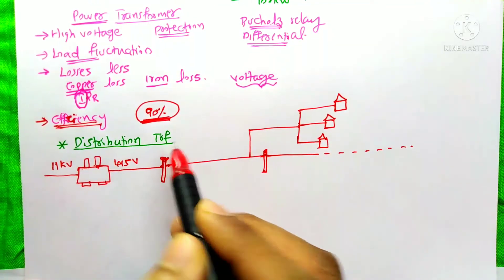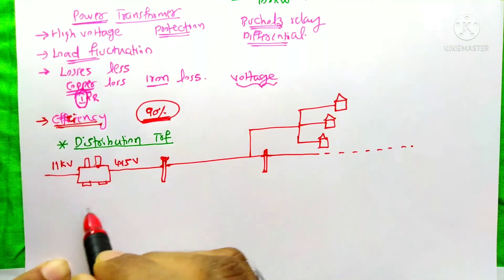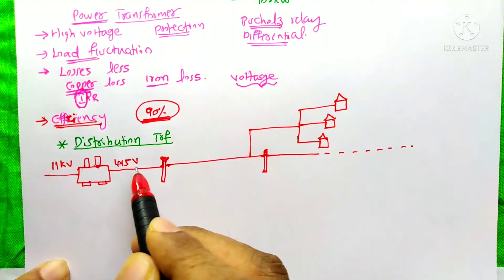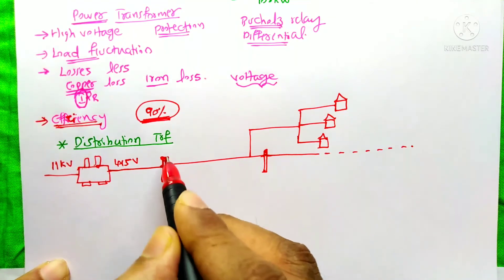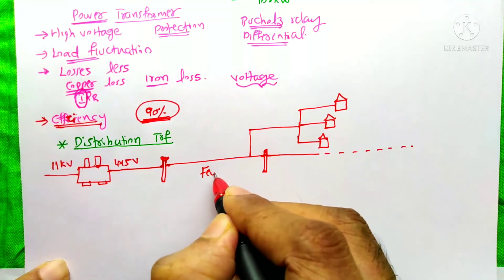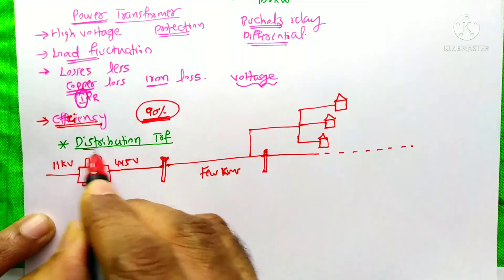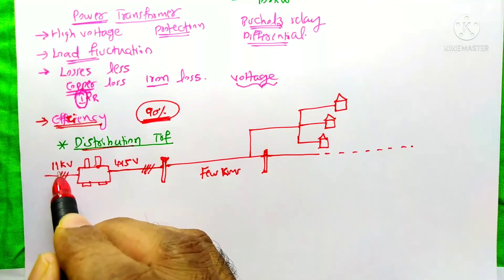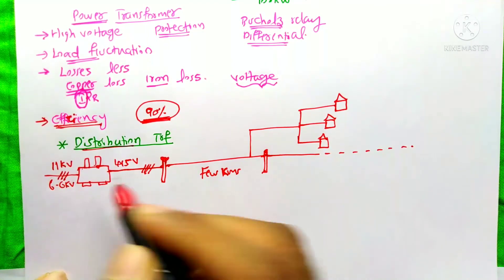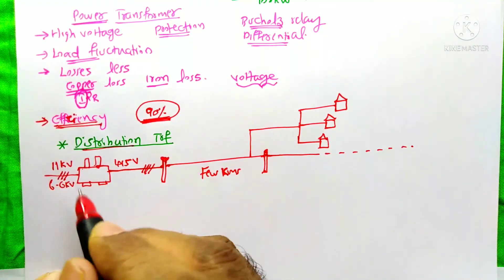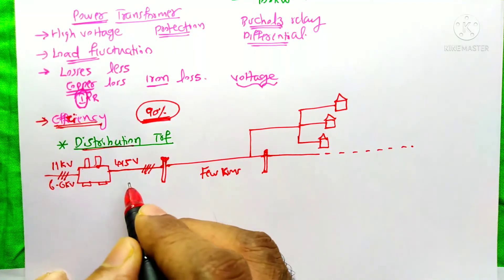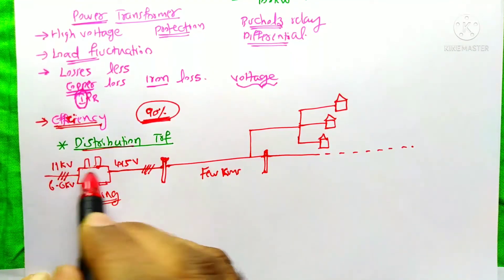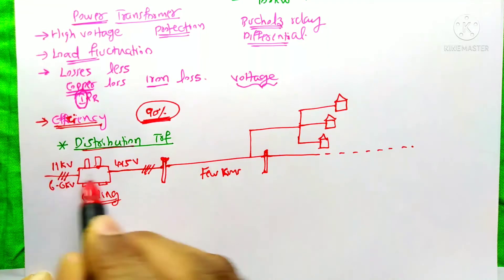Now regarding the distribution transformer: suppose it is a transformer in our locality converting 11 kV to 415 V, directly connected to a post, serving only a few kilometers. As the name indicates, it distributes power to consumers — to houses. This voltage may also be 6.6 kV depending on the country; this example covers India. The distribution transformer can be called an ending transformer, because it is always installed at the end of the transmission line.